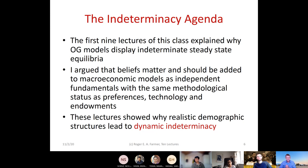The point of those first nine lectures was to show why realistic demographic structures typically lead to dynamic indeterminacy models — and the most we managed to arrive at in the examples we looked at were models with four steady state equilibria. What I'm going to do now is explain why I think there's another kind of market failure going on in macro economies. Instead of ending up with four steady state equilibria, the analysis I'll describe leads to models with a continuum of steady state equilibria.